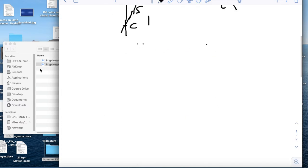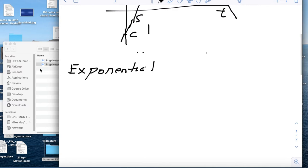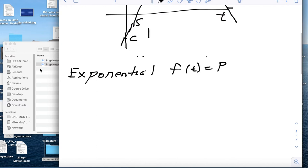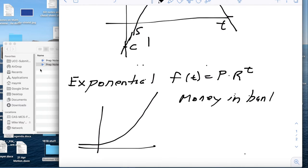The next kind of function we're interested in is an exponential function. This will look something like f of t is the principal times some rate to the t. These are functions that grow and grow more and more steeply as you go along. Examples will be money in a bank. So that my amount of money in the bank is the principal. I put $1,000 in. I get 3% interest raised to the power of the number of years.